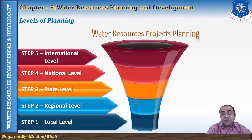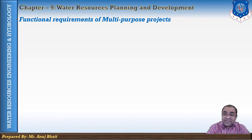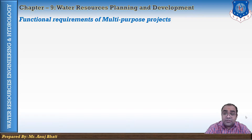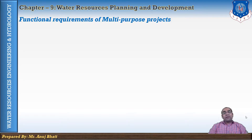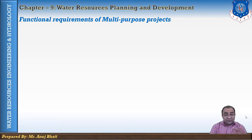Now, let us discuss the functional requirements of multipurpose projects, since most of the projects are multipurpose projects. A multipurpose project is designed to serve a number of purposes. The purposes usually served are irrigation, hydropower, flood control, water supply, navigation, and recreation. The water requirements for these functions are quite different. If these requirements are compatible, the stored water is used more effectively because it would simultaneously serve more than one purpose.